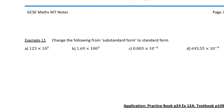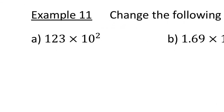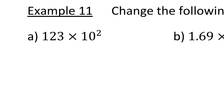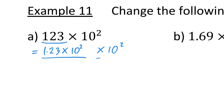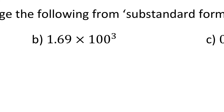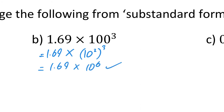Looking at more examples using this method: Part A — I write it as 1.23 times 10 squared, and outside I still have my times 10 squared. I've written that number in standard form and then multiply by 10 squared, so the final answer in standard form is 1.23 times 10 to the power of 4. Part B — we have 1.69 times 100 cubed. The 100 is the same as 10 squared, and that's being cubed, so that's 1.69 times 10 to the power of 6, which is in standard form — perfect, because we have our number between 1 and 10 times 10 to the power of something.